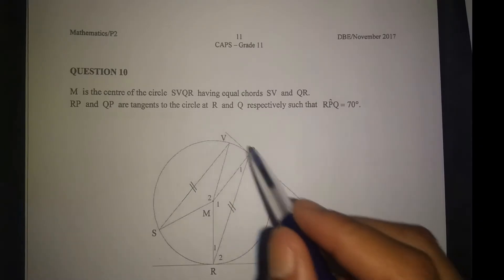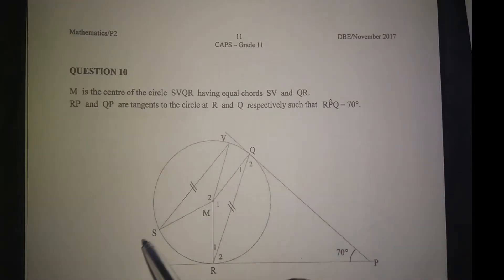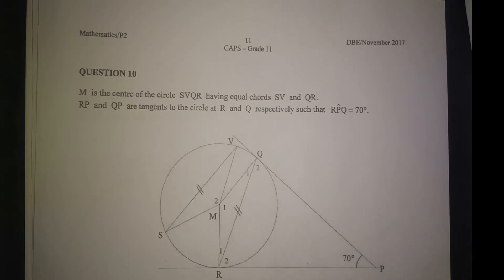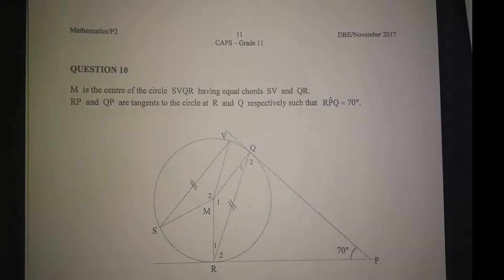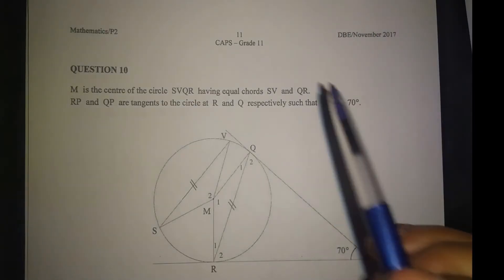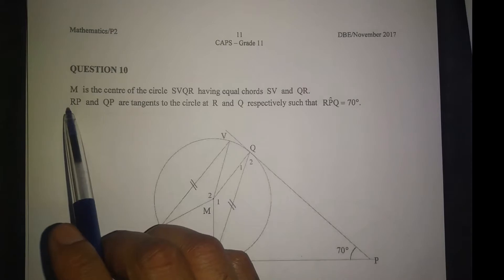So this is a circle with two chords that are equal - S, V and Q, R. These two lines mean these chords are equal. Right, equal chords.